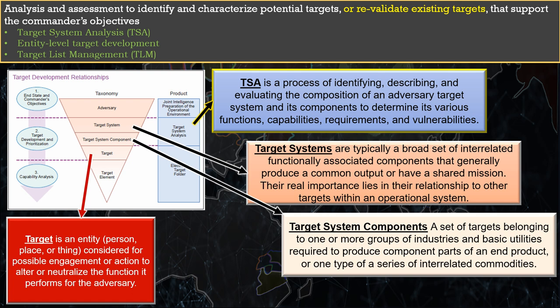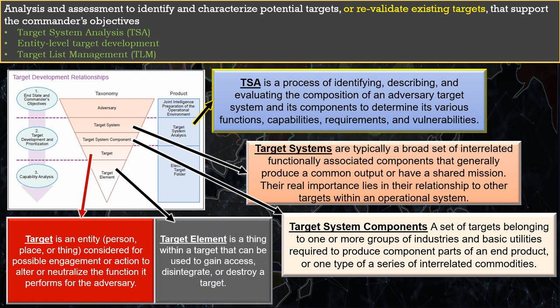From here, you identify target elements, which are things within a target that can be used to gain access, disintegrate, or destroy a target. Once you nominate new or revalidate existing targets, as an analyst you go work the process of target list management with FHIRS planners. There are multiple target lists out there that support different requirements and different effects. The best people to talk to about what target lists are and what they're used for are your FHIRS personnel — typically a 131-Alpha, a 13-Alpha, or a senior FHIRS non-commissioned officer.